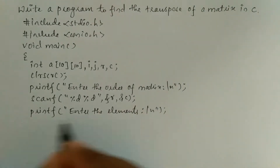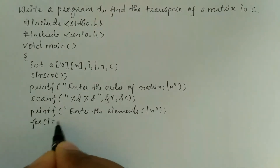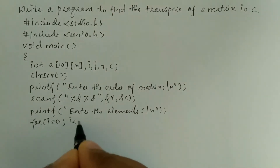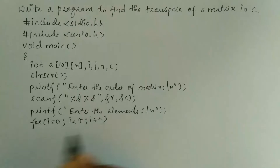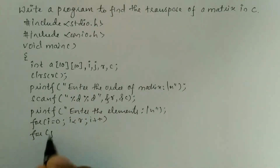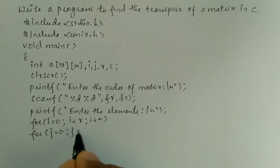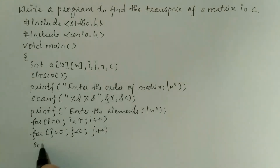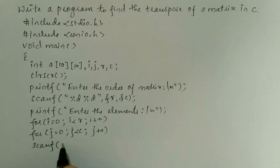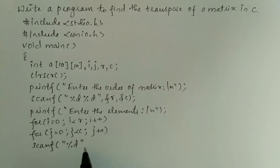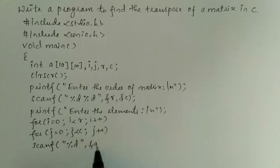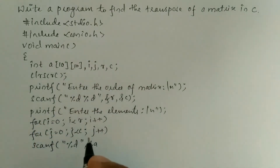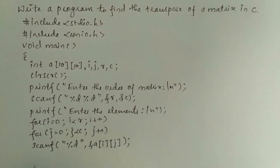In order to enter the elements, we use an iterative statement: for i equal to zero, i less than row, i plus plus, and take one more for loop: j equal to zero, j less than column, j plus plus. Now we'll use the scanf statement — %d format specifier — and ampersand a[i][j], and put semicolon.